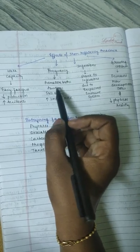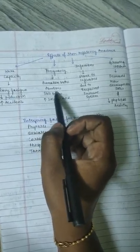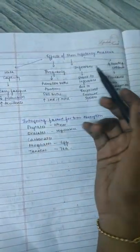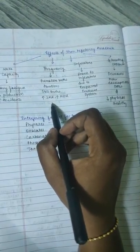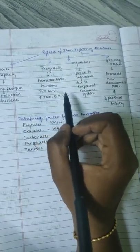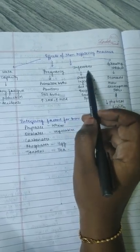In pregnancy conditions, there may be chances of premature births, abortions due to lack of hemoglobin, stillbirths, and increased infant mortality rate and maternal mortality rate.